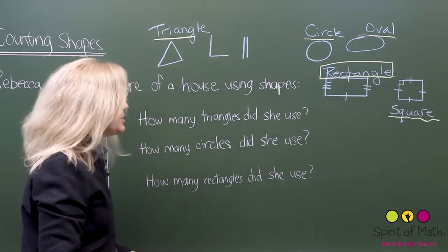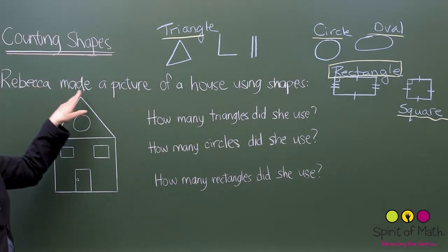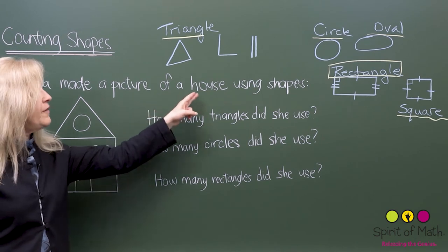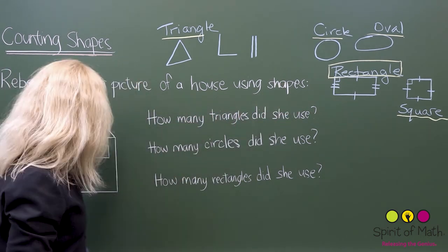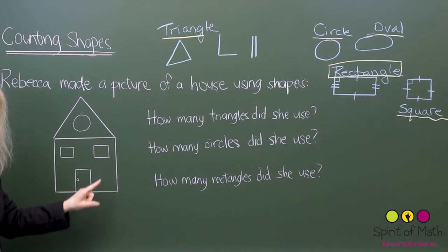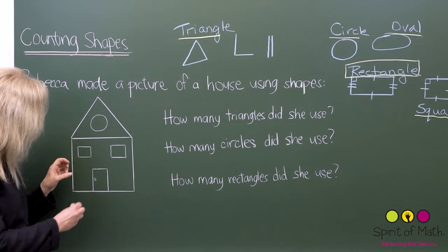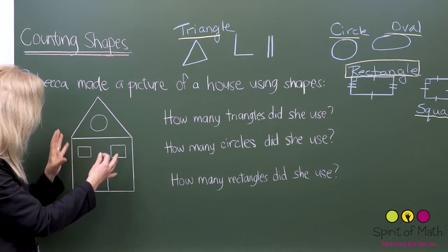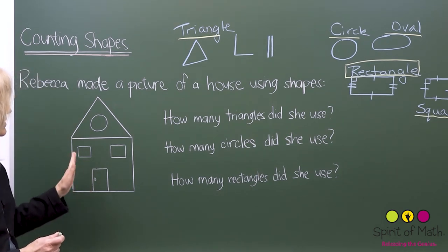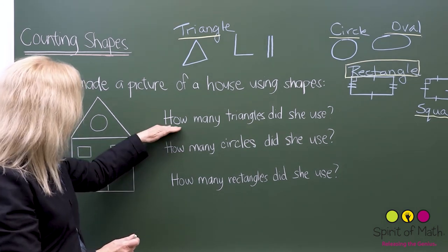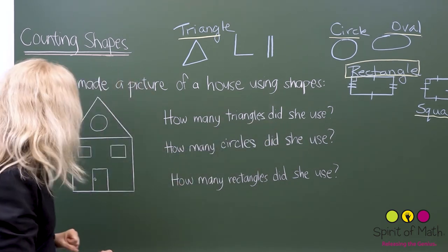That's important because the question you're going to do will be looking at how many rectangles there are. Even if you see a square, a square is a rectangle, so remember to count that. Now let's look at this exercise. It says: Rebecca made a picture of a house using shapes. Look at this house — can you identify any shapes in there? Can you see the shapes? I can see lots of shapes. The first question asks: how many triangles did she use?